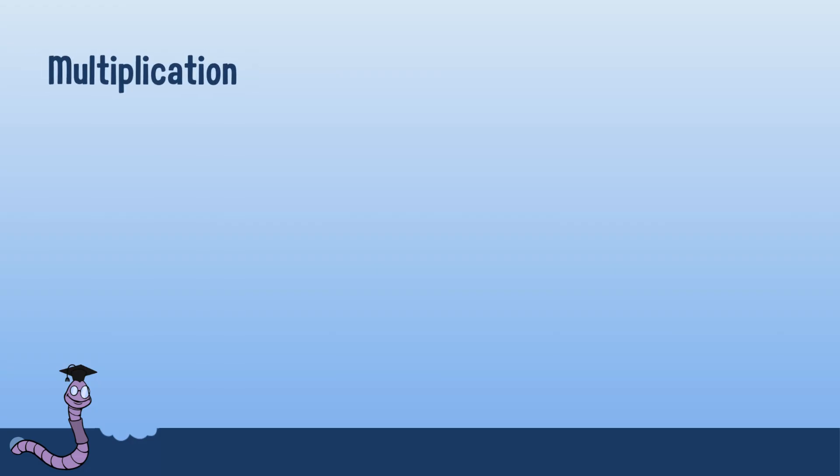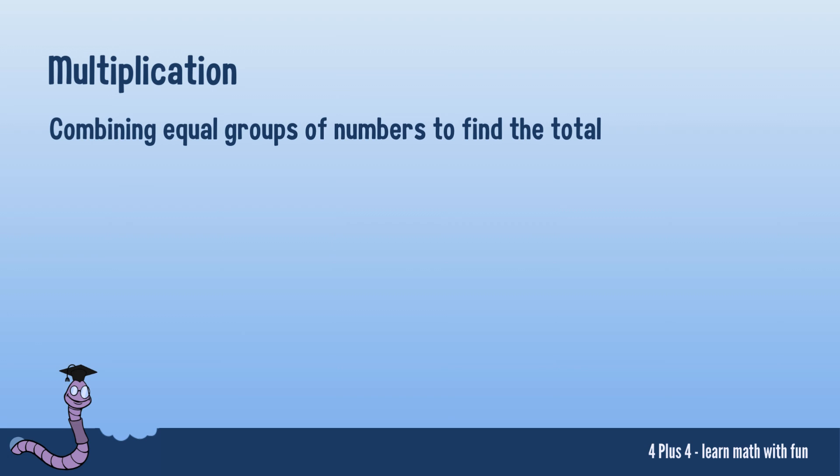First things first, what is multiplication? In its simplest form, multiplication is a mathematical operation that combines equal groups of numbers. It's a way to quickly calculate the total when you have multiple sets of the same quantity.